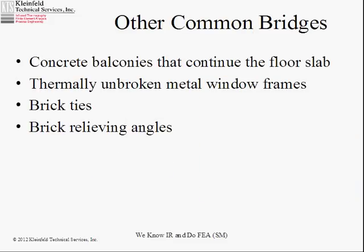Other common bridges would be concrete balconies that are contiguous with the floor slab. In an apartment building with balconies every floor all the way around, every one of those is releasing heat because the floor inside is warm, connected to the balcony outside directly, and the balcony is warmer than it should be if it could be isolated with a thermal break. Thermally unbroken metal window frames are the ones people think of immediately. Metal window frames without thermal breaks are a disaster from the energy standpoint. Brick ties, brick relieving angles — which are angle iron every one to two floors holding the bricks up — are tied back into the structural wall and represent a bridge through that metal path.